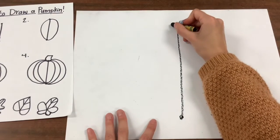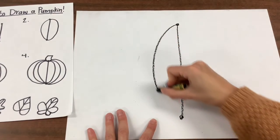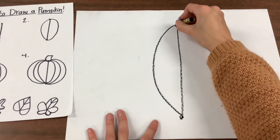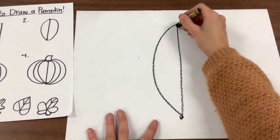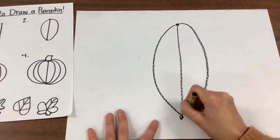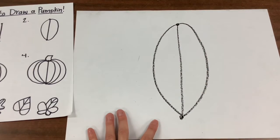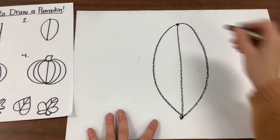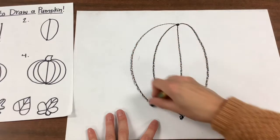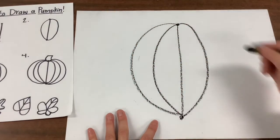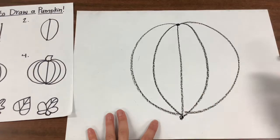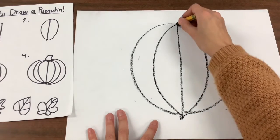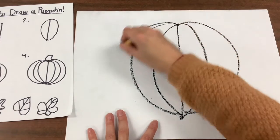Then you are going to draw a curve on one side, and you're going to match that curve on the other side. Whatever you do to one side of your pumpkin you're going to do to the other. You'll just keep adding curves until your pumpkin is as large as you want it to be.